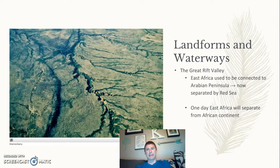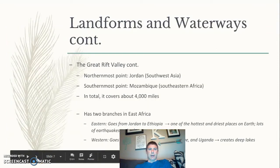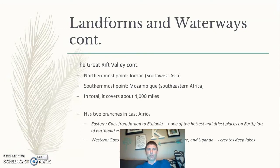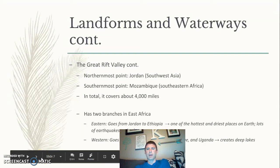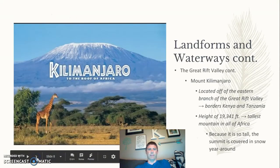The picture doesn't do justice to how massive it actually is. East Africa used to be connected to the Arabian Peninsula but is now separated by the Red Sea, similar to how Pangaea once had all continents connected. The eastern and western parts of the Rift Valley create two different climates — the east, like Ethiopia, is hot and dry, while the west sees much more rainfall and even jungles.